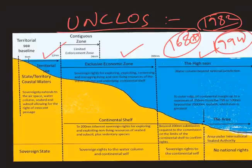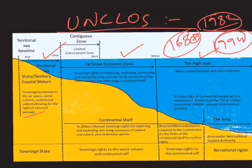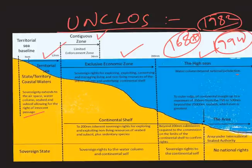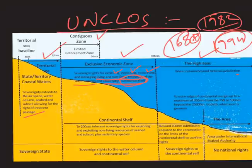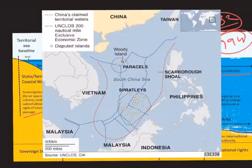The territorial sea extends from the baseline for about 12 nautical miles and is also called state or territorial coastal waters. Here the sovereignty of that state extends to the airspace, water column, seabed and subsoil, and it allows for the right of innocent passage. The Exclusive Economic Zone extends for about 200 nautical miles, and within it there is the contiguous zone, also called the limited enforcement zone. Within the EEZ, countries have sovereign rights for exploring, exploiting, conserving and managing both living and non-living resources of the water column and the underlying continental shelf. Beyond 200 nautical miles we have the high seas, which is the water column beyond national jurisdiction. So as per UNCLOS, the region from the baseline up to 200 nautical miles falls under the jurisdiction of the respective country — and this has been the main reason for contention.